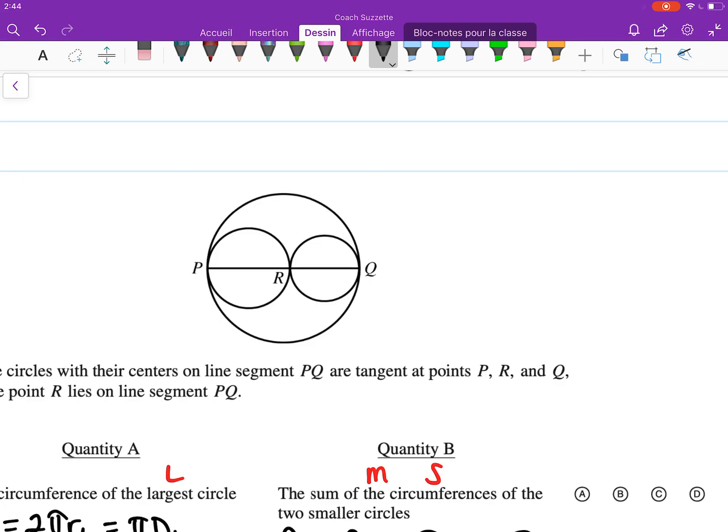Since we know there are no gaps and the centers of all circles lie on the line, that means this is a diameter of the medium circle, this is a diameter of the small circle, and this whole thing is the diameter of the largest circle. So the diameter of the medium circle plus the diameter of the small circle equals the diameter of the largest circle.